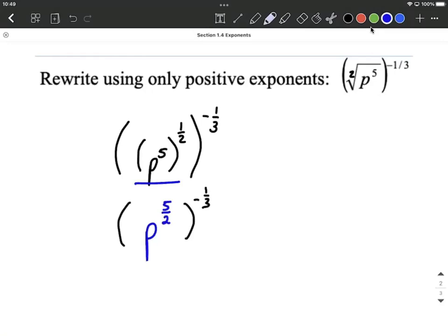Then what I would do is go ahead and try to bring that exponent, the negative one-third, into the inside. Again, that same process says we multiply our exponents. So you multiply the numerators. 5 times 1 is going to be 5 for our new exponent, our new numerator. And then you multiply the denominators. 2 times 3 is going to make 6. But a positive and a negative multiplied together gives us a negative.